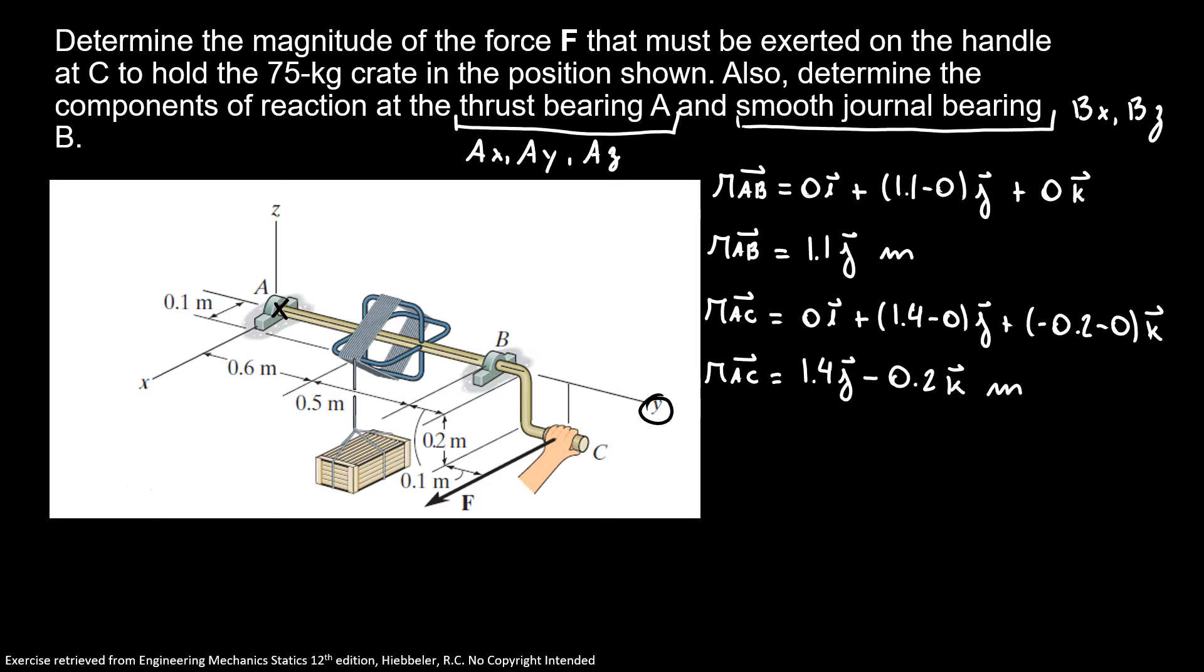And finally we have our distance AW, where our weight is. So we have (0.1 minus 0)i plus (0.6 minus 0)j plus 0k. So our distance from A to where the weight is is 0.1i plus 0.6j.